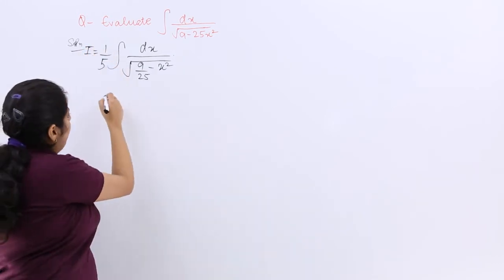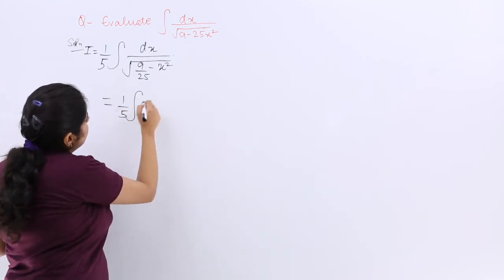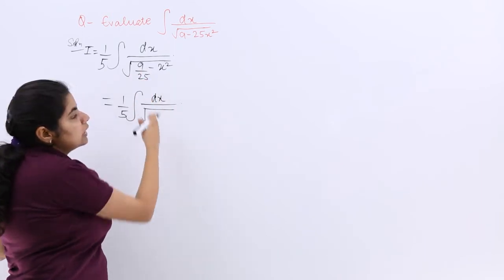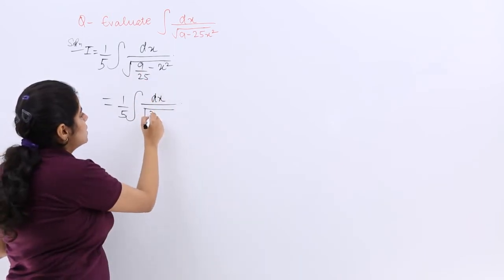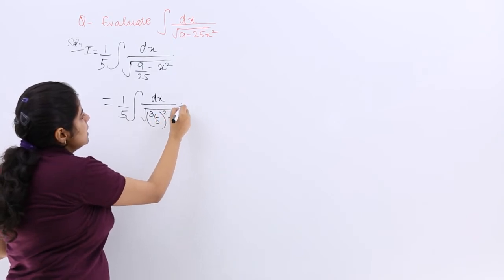Now see, what is the next step? 1 by 5 already there. Then integration dx already there. Under root 9 upon 25 is 3 by 5 whole square minus x square.